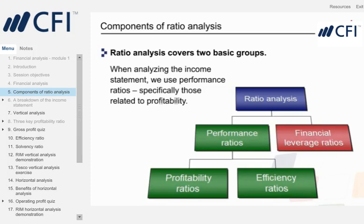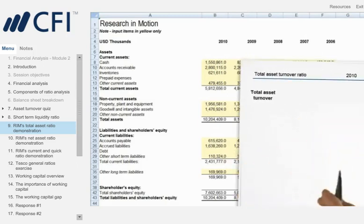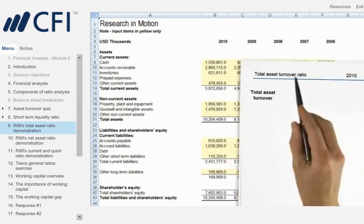For this module, we are only focusing on the performance ratios. And when analyzing the income statement, it is the profitability ratios that we pay attention to. Let's look at RIM's balance sheet and calculate some ratios, starting with the total asset turnover ratio.